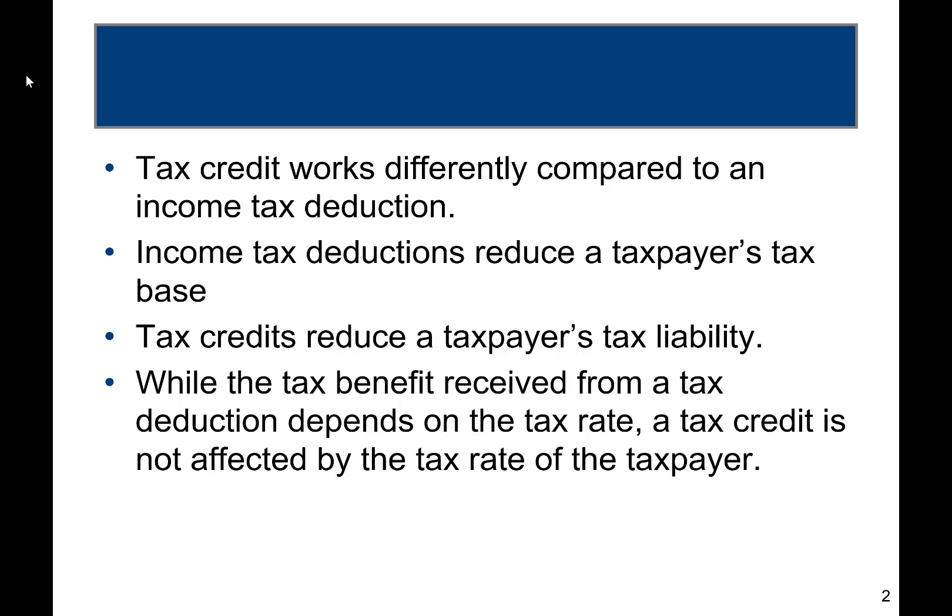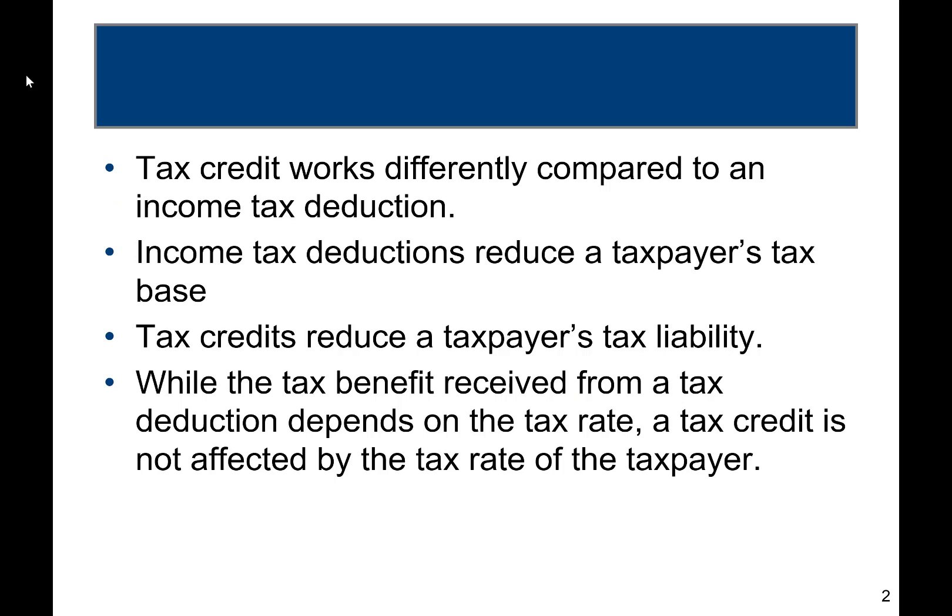We want to make sure we understand how a tax credit works and how it is different from a deduction. A deduction reduces the tax base — it reduces the taxpayer's taxable income. Tax credits go directly against the taxpayer's liability, so they obviously have more benefit. One reason in particular is that a credit is not affected by the taxpayer's tax rate. We've already used the tax rate to calculate the tax liability, and then we get to take the credit directly against that.